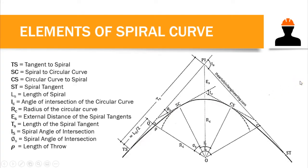Here is an example of spiral curves. We have spiral tangents — at the beginning the curvature is very small, approximately equal to a straight line, and then at a certain point this is the start of our circular curve. From TS to SC this is our spiral curve.